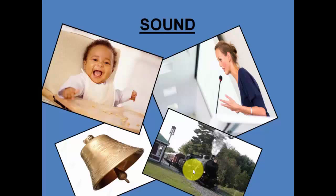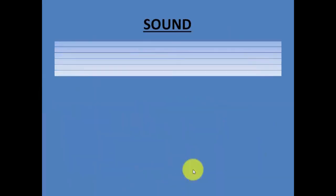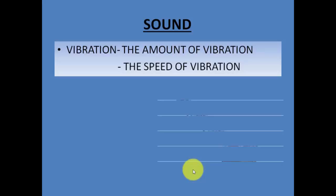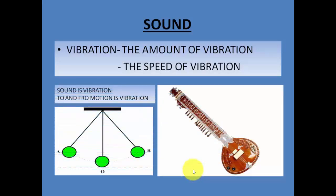Sound is primarily produced by what we call vibration. Whenever there is vibration, sound is produced. In vibration we talk about two things: one is the amount of vibration, and another is the speed of vibration. If the speed of vibration is fast, a different kind of sound is produced; if the speed of vibration is slow, a different kind of sound is produced. So what is vibration? Vibration is a rapid to-and-fro movement.